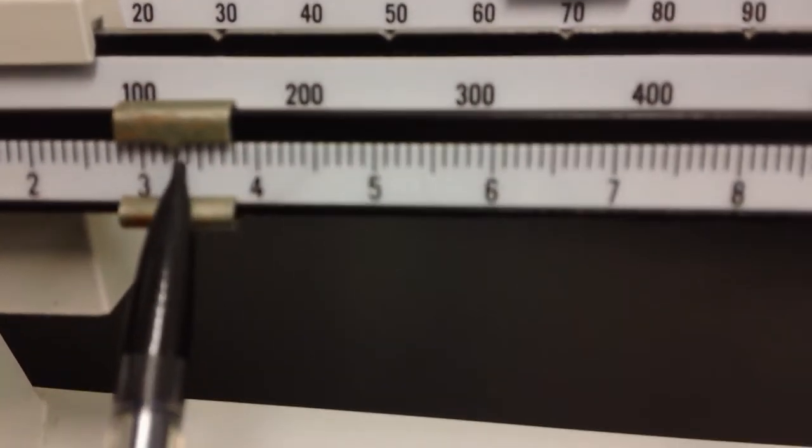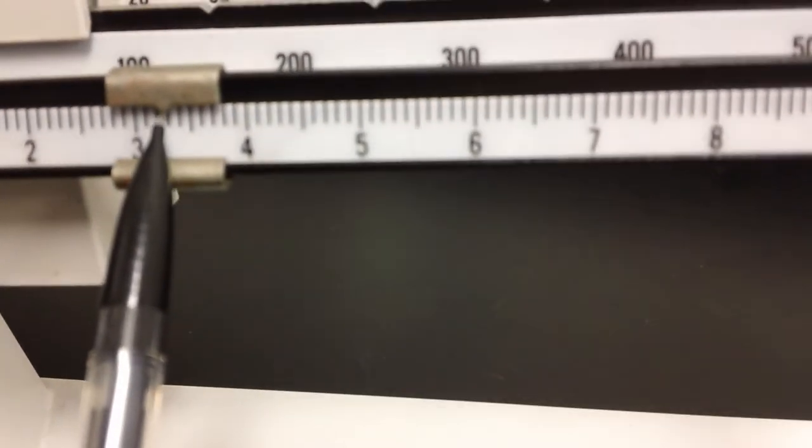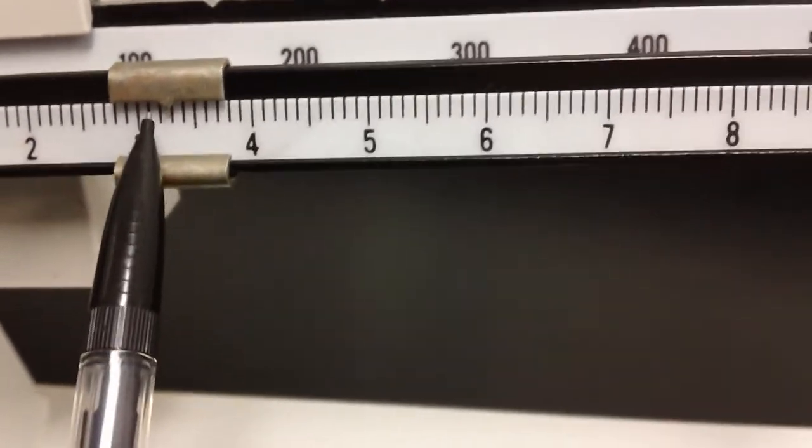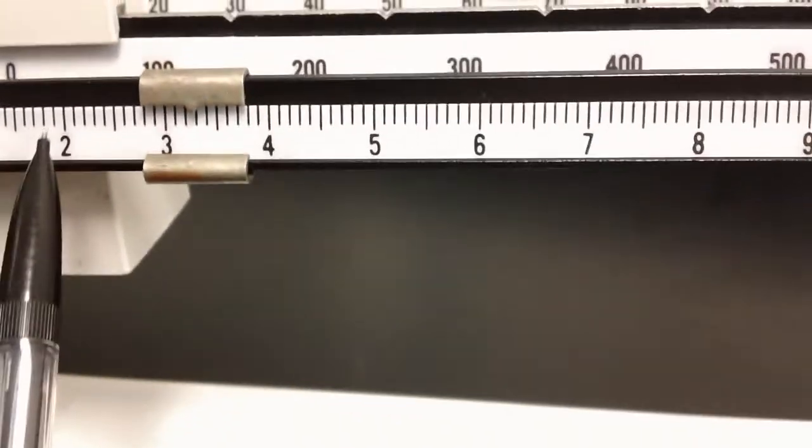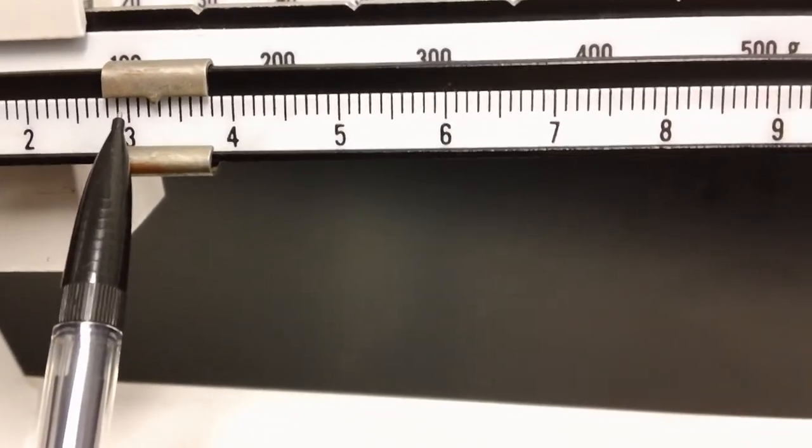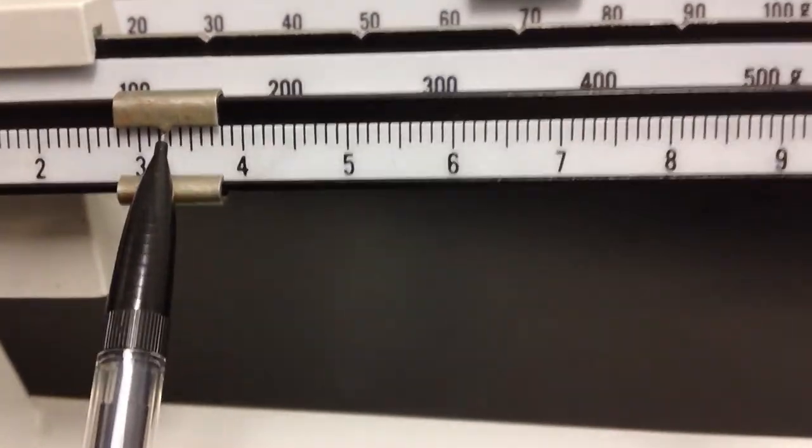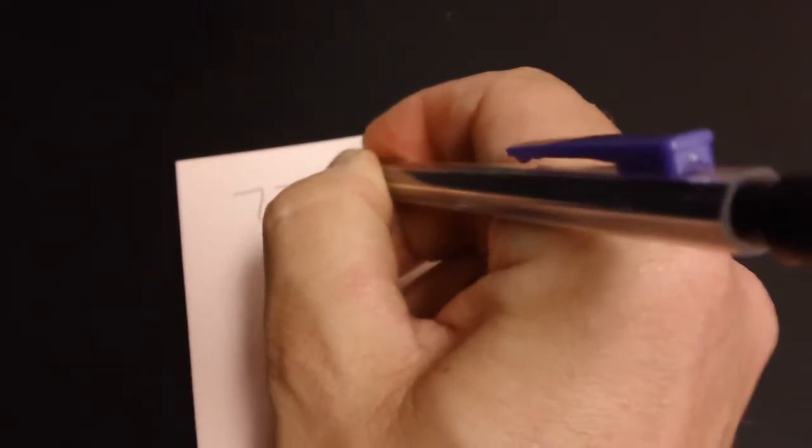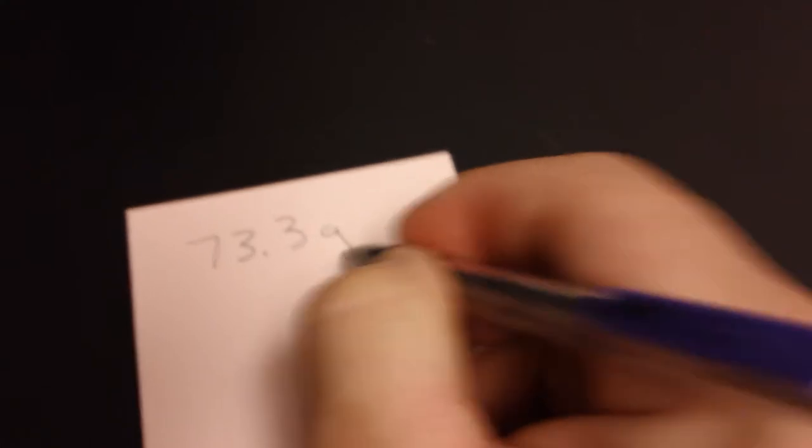So let's add this up. I'm going to take 70 plus 1, 2, 3. And if I'm measuring this, you guys, notice that there's a little tiny arrow right in the middle of this counter mass. So that's 70, 1, 2, 3, 0.123 grams. So we would write that down as 73.3 grams.